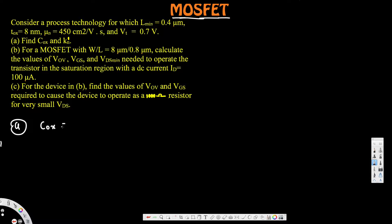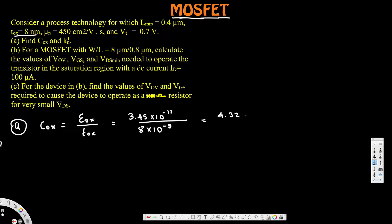C_ox, the oxide capacitance, can be calculated using the formula ε_ox divided by t_ox. ε_ox is the permittivity of silicon dioxide — a constant value that always remains the same. Its value is 3.45 × 10⁻¹¹, divided by the thickness of 8 nm, which is 8 × 10⁻⁹ meters. Dividing these gives 4.32 × 10⁻³ F/m².